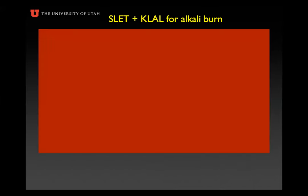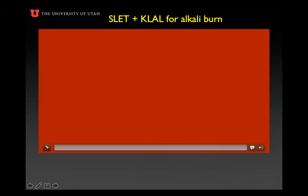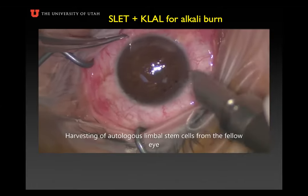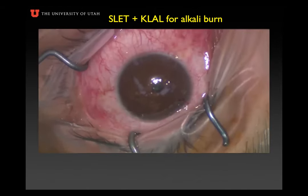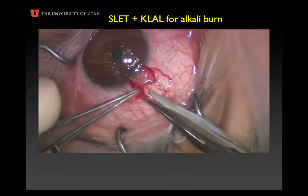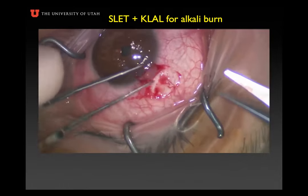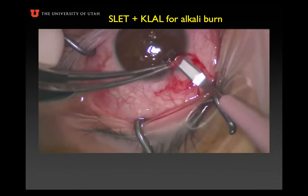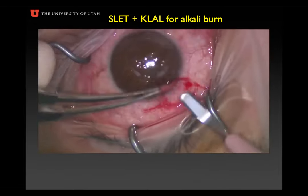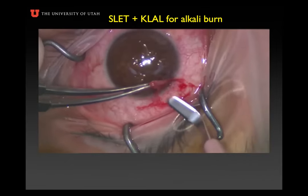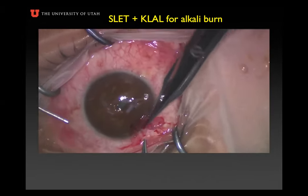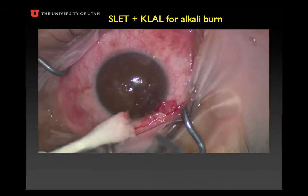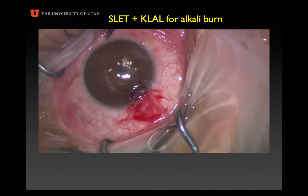Colin and I did this case in November — we're going to post it on CORE. It may be the first time this has been described. We have a 45-year-old gentleman from Idaho who was working construction and got a cement burn to one eye; the other eye was completely uninvolved. We wanted to do a SLAT, and he's young enough — he didn't want systemic immunosuppression. But when you see his eye, you'll know why I wanted to combine it with the keratolimbal allograft, because he has such aggressive vascularization and conjunctivalization that I felt there was no chance a SLAT alone would work for him.